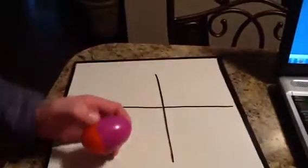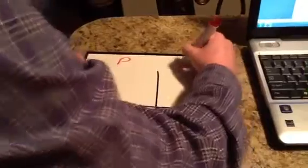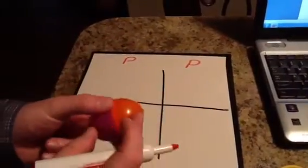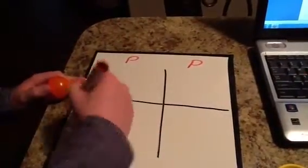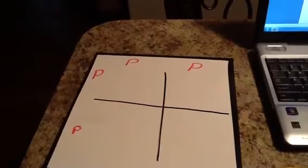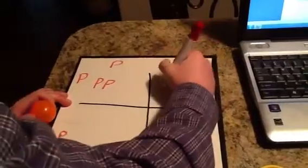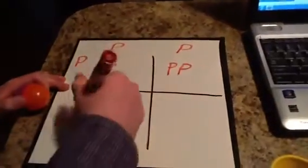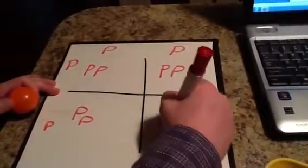Let's do one as an example. We have our two parents — purple is the dominant parent, it has big P, big P. So in our Punnett square, we put big P, big P across the top. The other parent is orange, which is big P, little P because it's heterozygous. Now let's fill out the Punnett square: the four cells come out to big P big P, big P big P, big P little P, and big P little P.